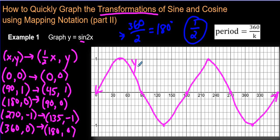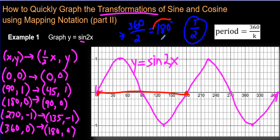Always label it — your teacher will love to see it labeled. And there we have our sine curve: sine 2x. The period is the distance between where the graph starts over again; it starts over at this point right here. So between here and here is 180 degrees — that's what we found to be our period using the formula.